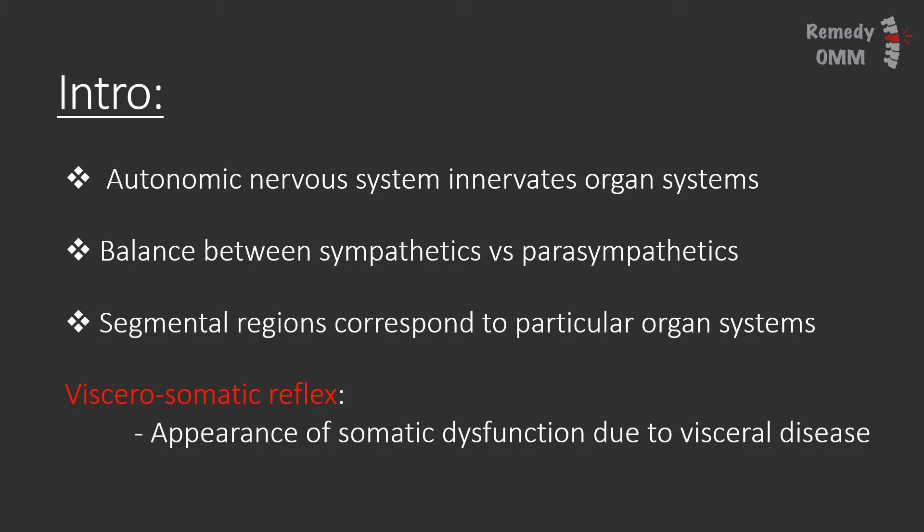Your autonomic nervous system is made up of the parasympathetic and the sympathetic systems. These two systems need to be in a certain balance in the body. When they are unbalanced is when you start to see disease in the form of medical problems. It is the osteopathic belief that this imbalance in sympathetic and parasympathetic tone can cause somatic changes that, when manipulated, can supplement and aid in treatment. These somatic changes that occur as a response to the dysfunction of visceral organs are deemed viscerosomatic reflexes.